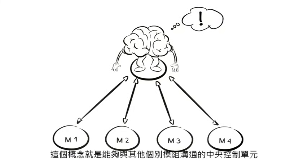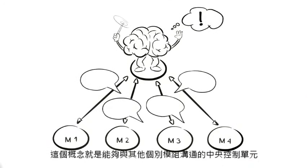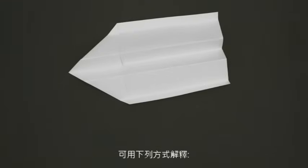This mind is the central control unit communicating with the individual modules. If our product was a paper plane, it would translate into this.